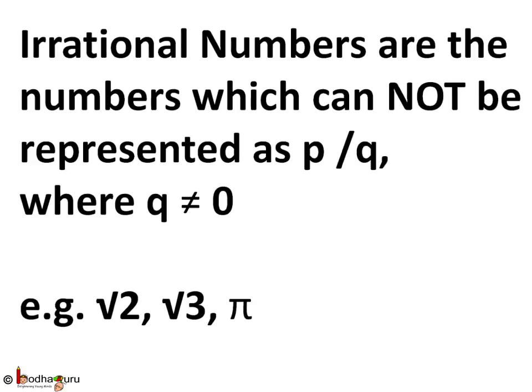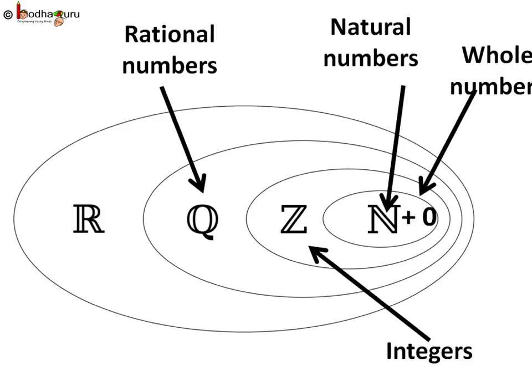So to summarize, starting from natural numbers N, which are 1, 2, 3, 4 and so on, 0 and natural numbers together are called whole numbers. The collection of negative numbers and whole numbers is called integers. The collection of integers and fractions which can be represented as p by q where q is not equal to 0 is called rational numbers. And irrational numbers and rational numbers together are called real numbers.